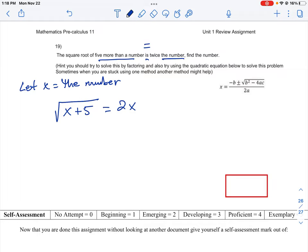This is similar to the previous question, just a little bit cleaner. To start working on this, you need to square both sides to get rid of the radical sign, so that's going to be x plus 5 equals 4x squared.